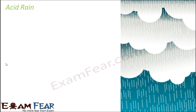Similarly, the rain is also getting mixed up with harmful substances and it is becoming acid rain. So what is acid rain? Rain which is acidic in nature — that type of rain which is contaminated with some sort of acids is called acid rain, and acid rain is very very harmful.